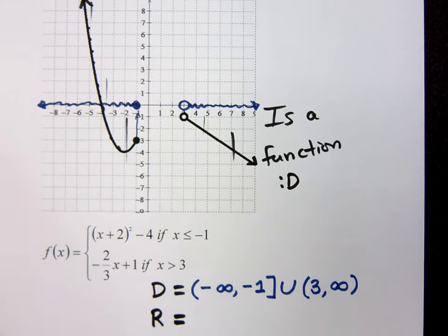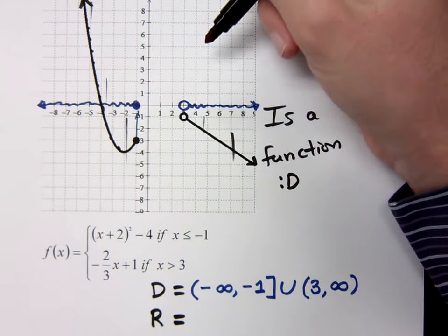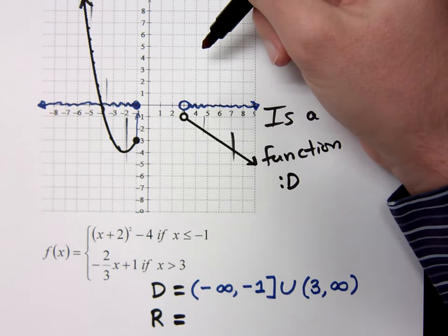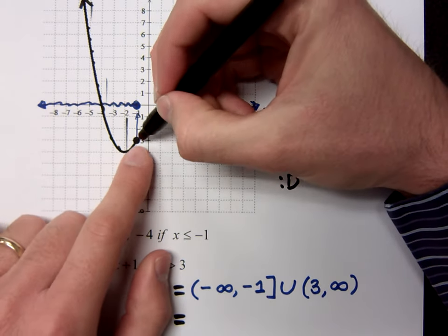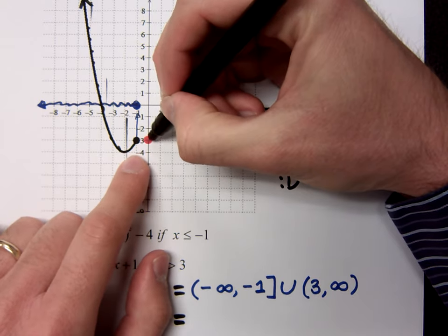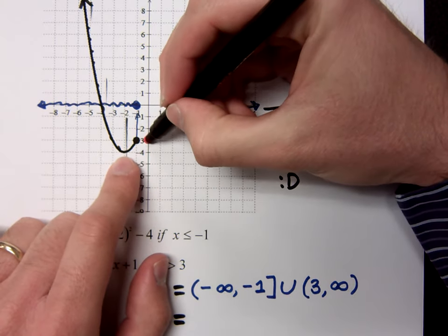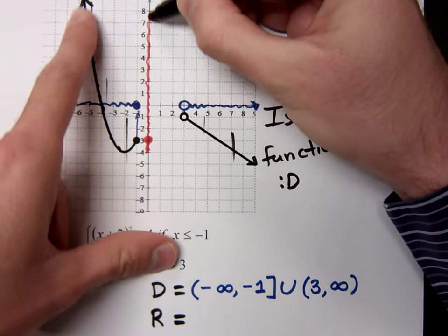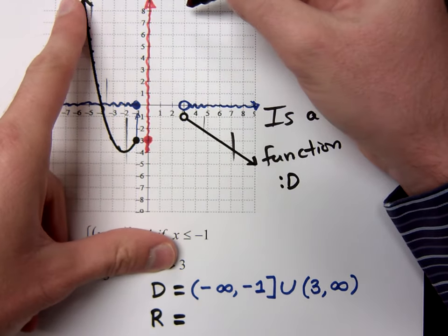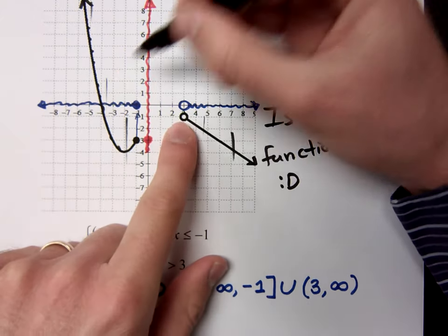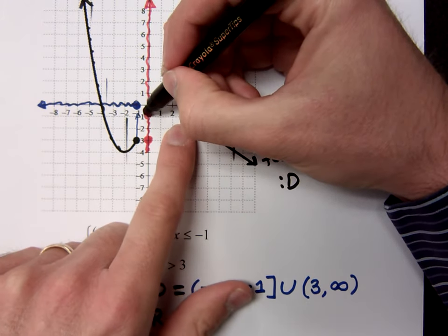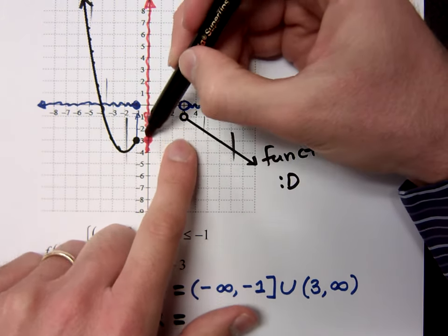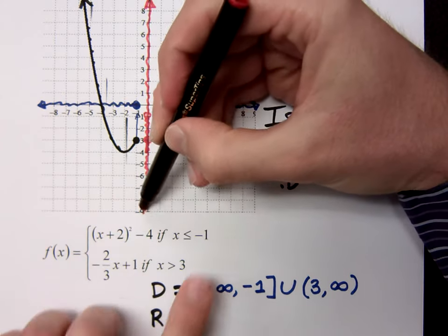Now, what about your range? Now, look, think about what we did before on these. This guy right here is a closed circle right here at 3, right? Now, watch what he's doing. He goes down, and then he goes all the way up. Do you all agree? Yes. This guy is an open circle here, and he's doing what? Going down. He's going all the way down.